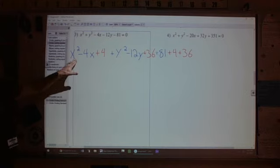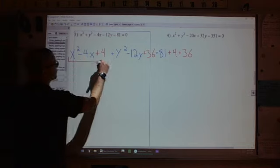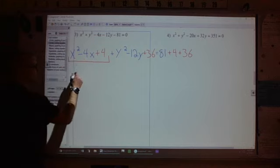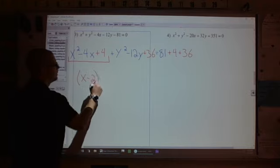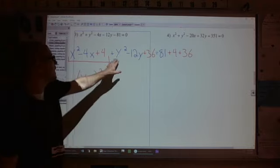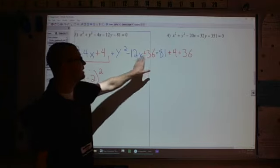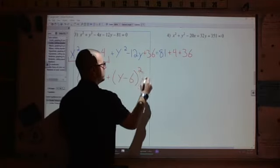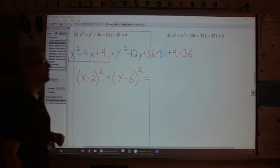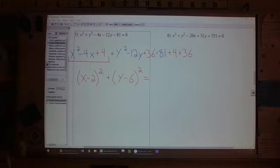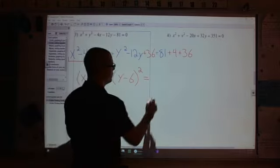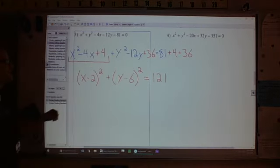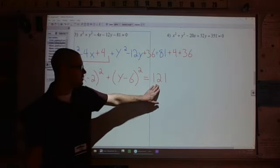And then I can factor. I've got my trinomials. I have x squared minus 4x plus 4, so factors of 4 that add to negative 4 are 2 and 2, negative 2, so x minus 2 squared. Y squared minus 12y plus 36, factors of 36 that add to 12, it's going to be negative 6 and negative 6, so y minus 6 squared is equal to, in this case, 81 plus 4 plus 36 is 81 plus 40, which is 121. So 121, which we can see now would be a circle that has a center at 2, 6 and a radius of 11.